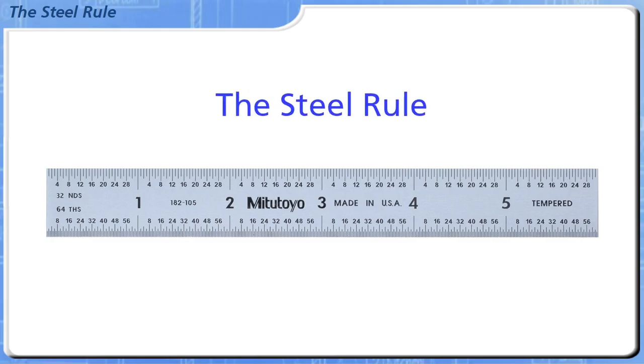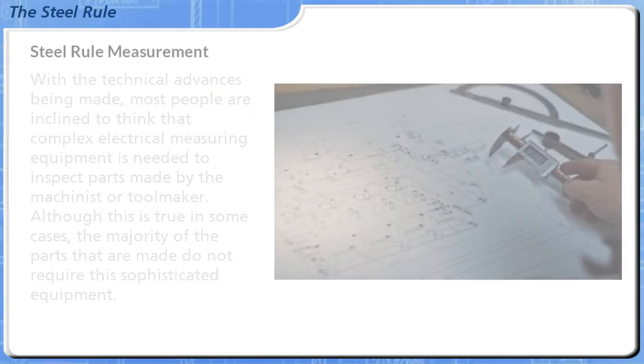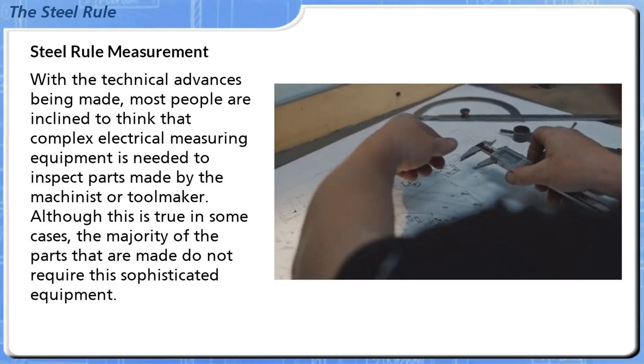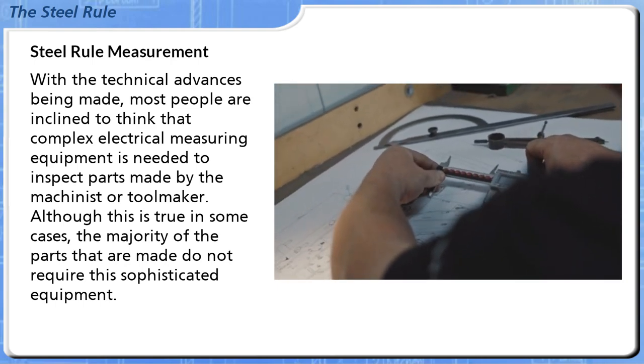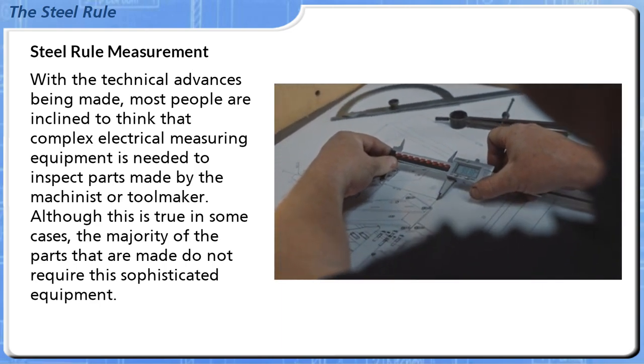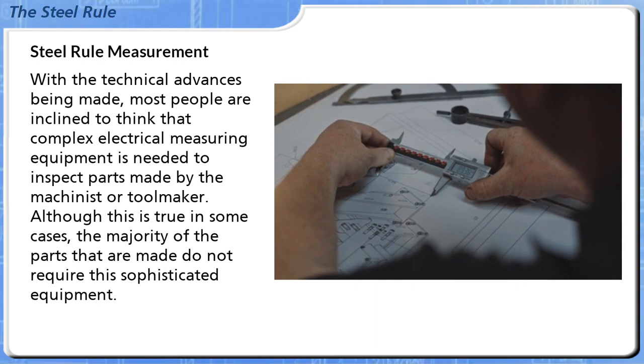Welcome to this module on the steel rule. With the technical advances being made, most people are inclined to think that complex electrical measuring equipment is needed to inspect parts made by the machinist or toolmaker. Although this is true in some cases, the majority of the parts that are made do not require this sophisticated equipment.